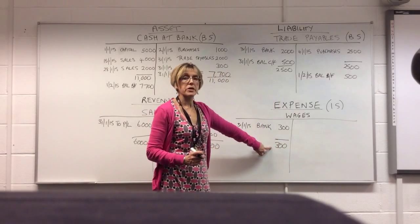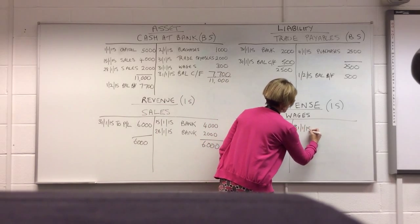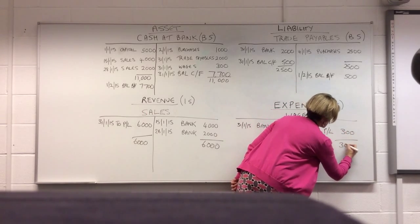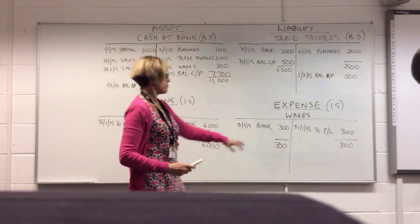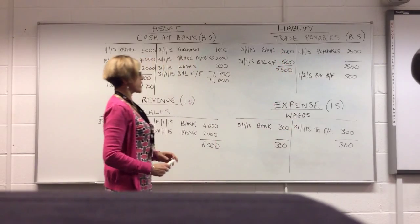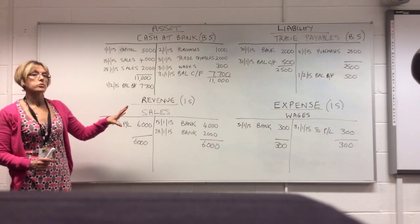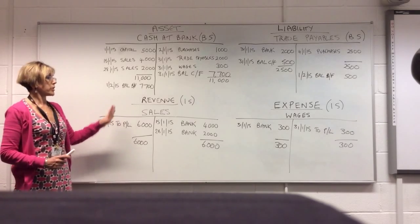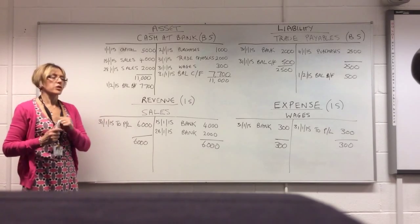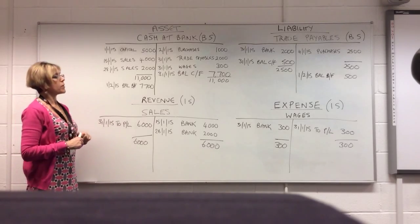I've got total debits of 300, so I put an entry over on the credit side at the end of the month. That closes that account out — both sides are equal, the balance has gone off to the profit and loss account, and that account is closed out. That's the different ways in which we close out our T accounts. When we've balanced them all off, we can then extract the trial balance — the test of whether we've entered a debit for every credit. More about that in the next video.